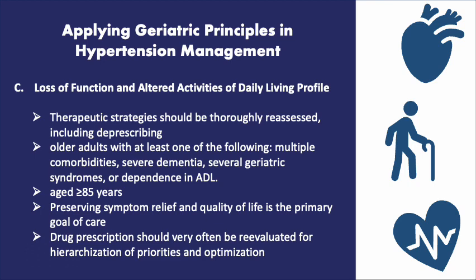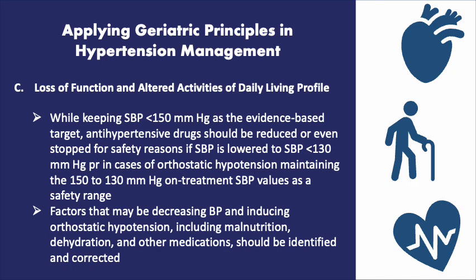Because iatrogenic risk is very high, specialists should work closely with general practitioners, pharmacists, and caregivers. While keeping systolic blood pressure less than 150 mmHg as the evidence-based target, antihypertensive drugs should be reduced or even stopped for safety reasons if the systolic blood pressure is lowered to less than 130 mmHg or in cases of orthostatic hypotension. Thus, maintaining the 150 to 130 mmHg on-treatment systolic blood pressure values has a safety range.